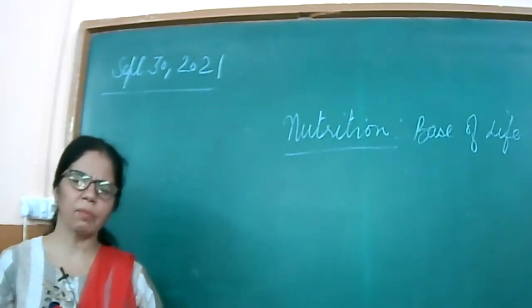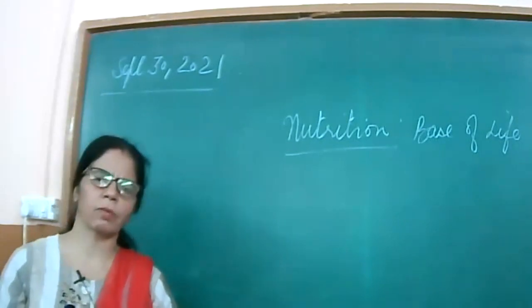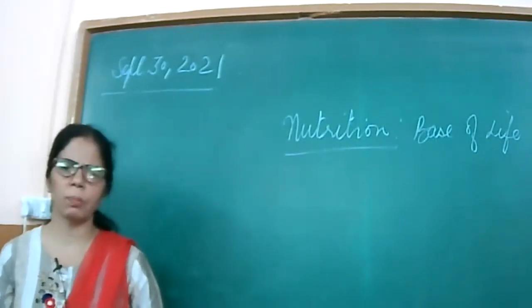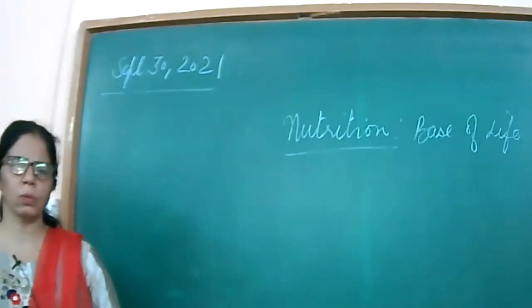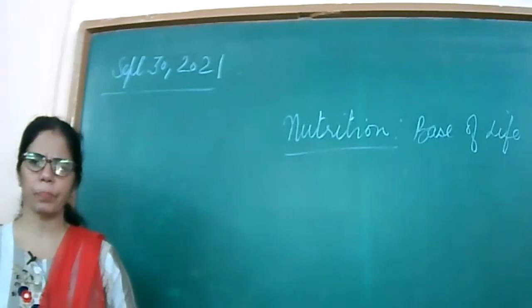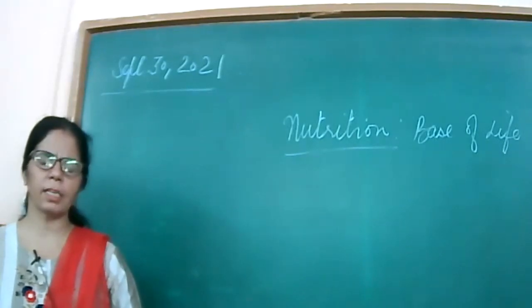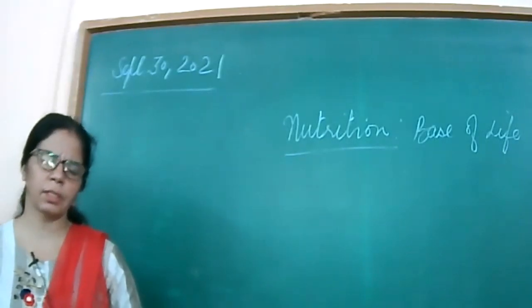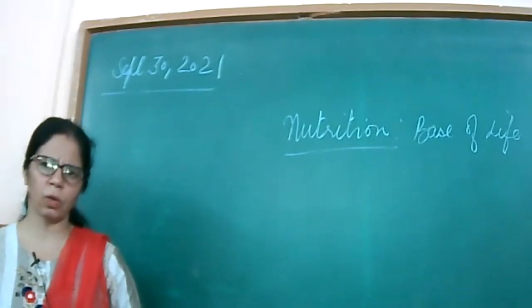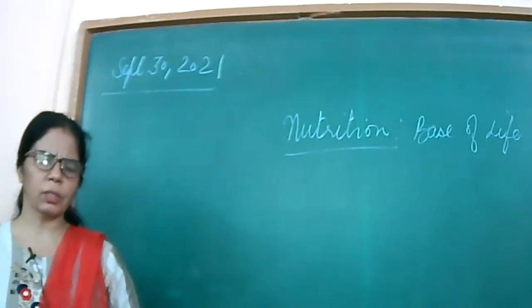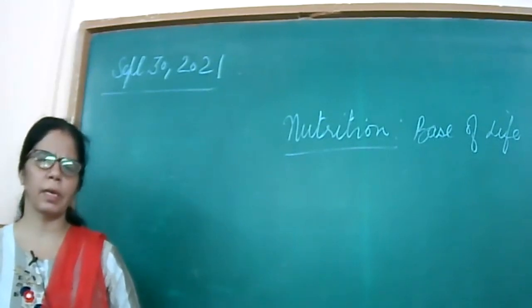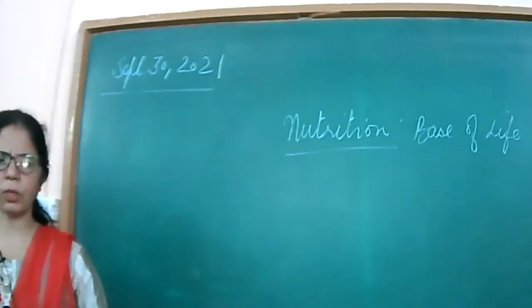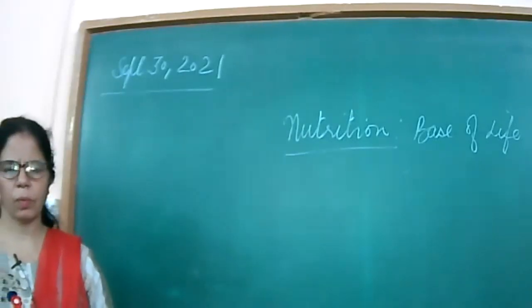So number one, we must take care of ourselves, of our family, and then we must also be very careful about giving something to others who don't afford or those who don't have anything. So taking care of oneself and then taking care of the others, that should be our motto of life. Nutrition, that is good diet or balanced diet, should be our main motto for ourselves and for others also. Right?